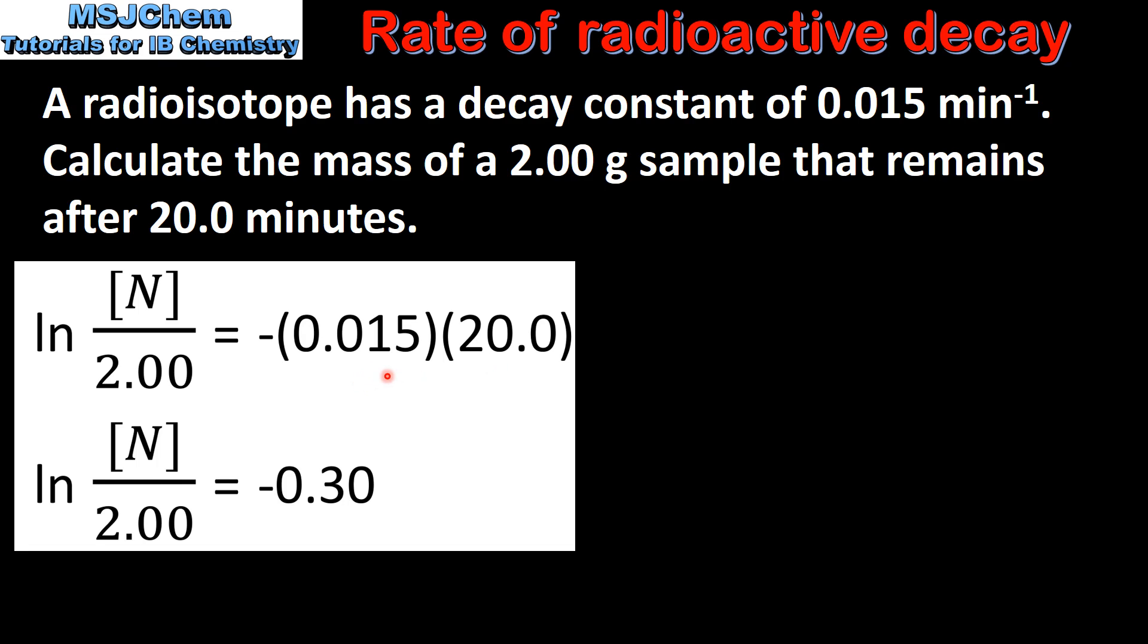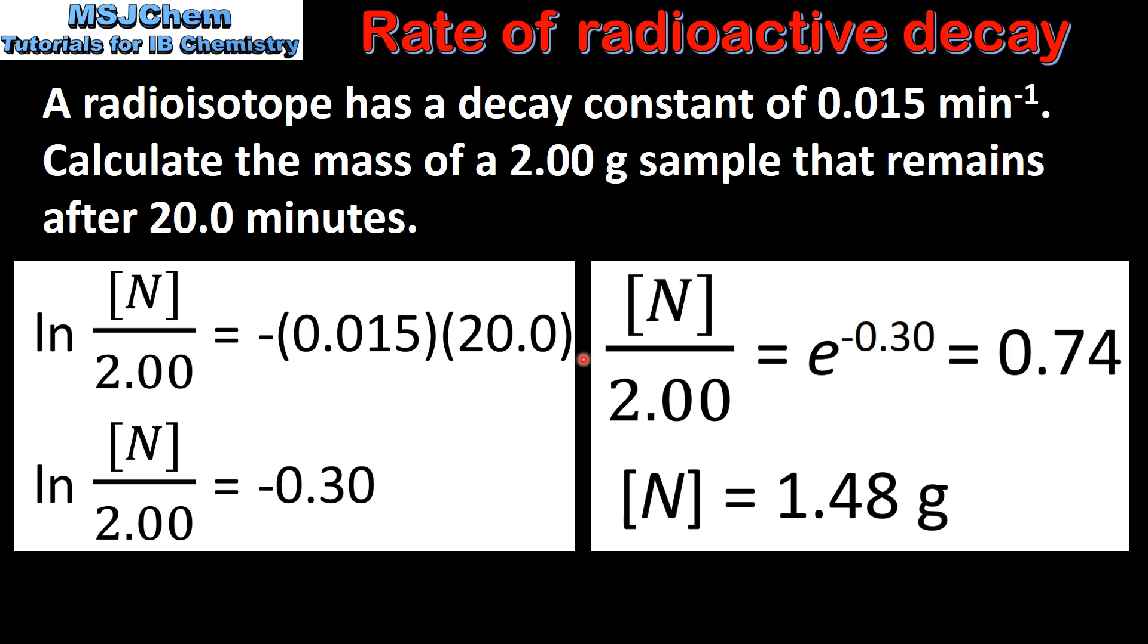When we multiply these two together we get negative 0.30. Next we have n over 2.00 equals e to the negative 0.30 which is equal to 0.74, which gives us a mass of sample remaining of 1.48 grams.